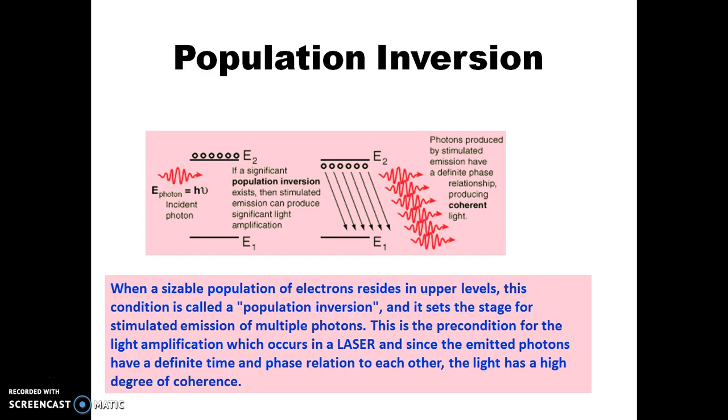But in order to get continuous laser emission, population inversion must take place. Now what is population inversion? It is the state where the number of atoms in excited state are more than the number of atoms in ground state, so that when a photon of matching energy is incident on this system, these atoms decay and we get continuous laser emission.